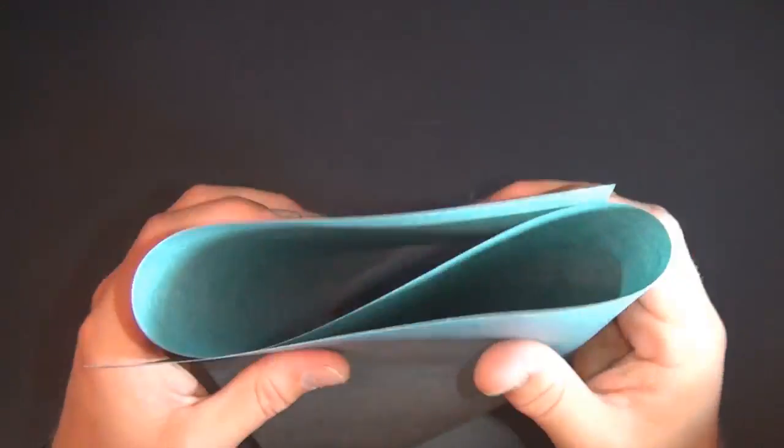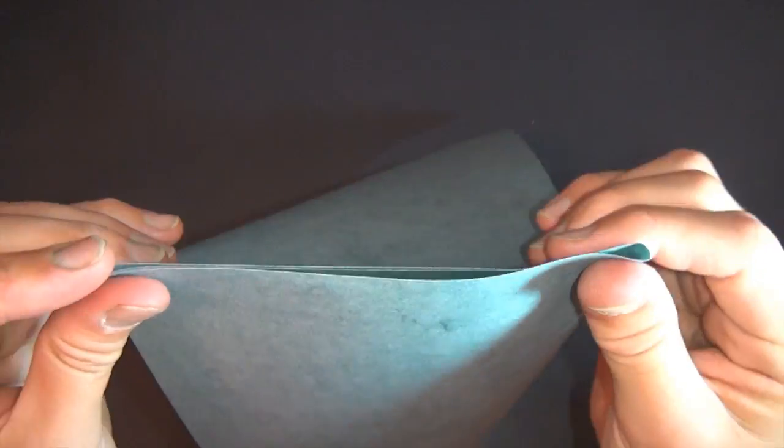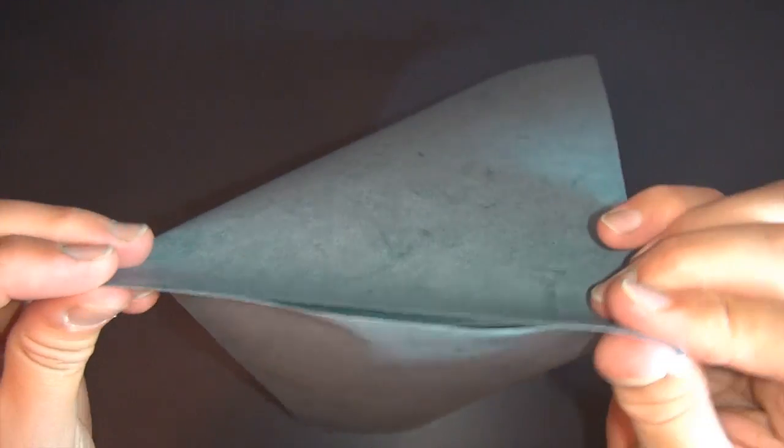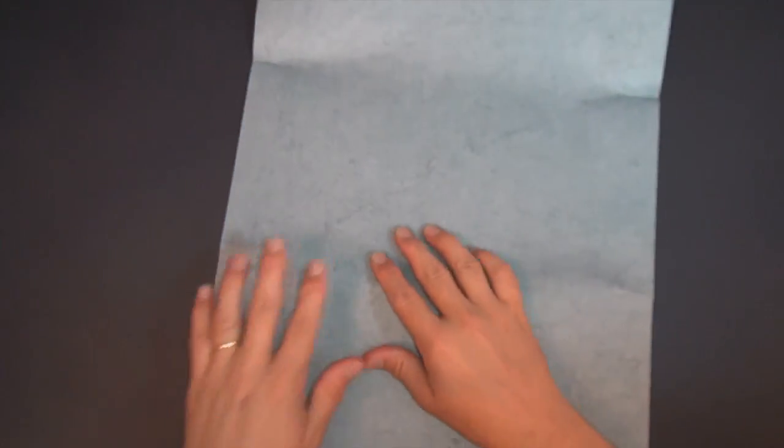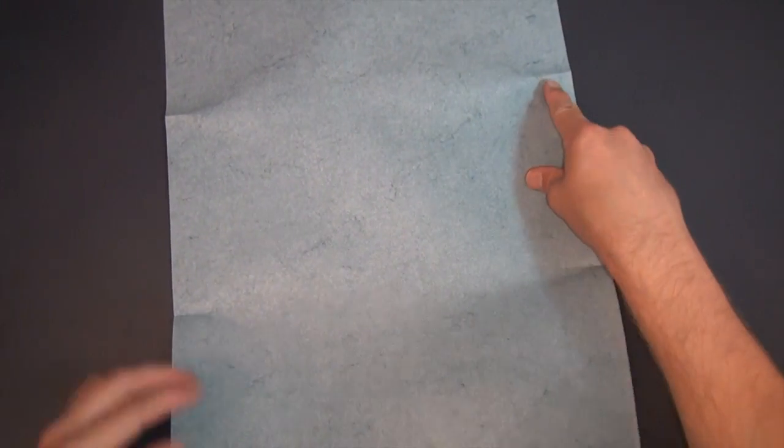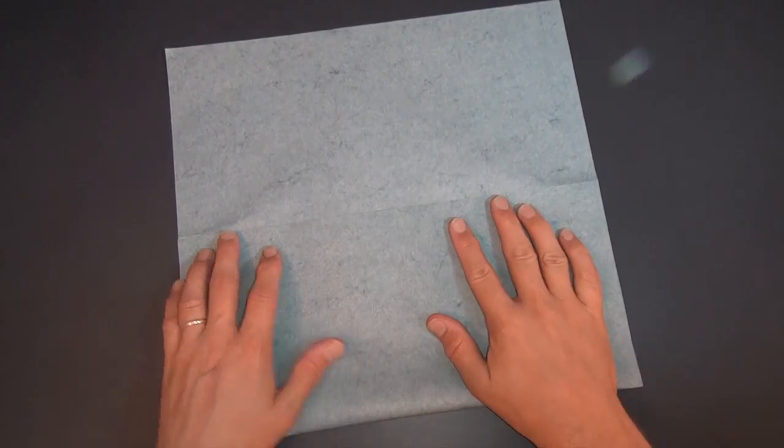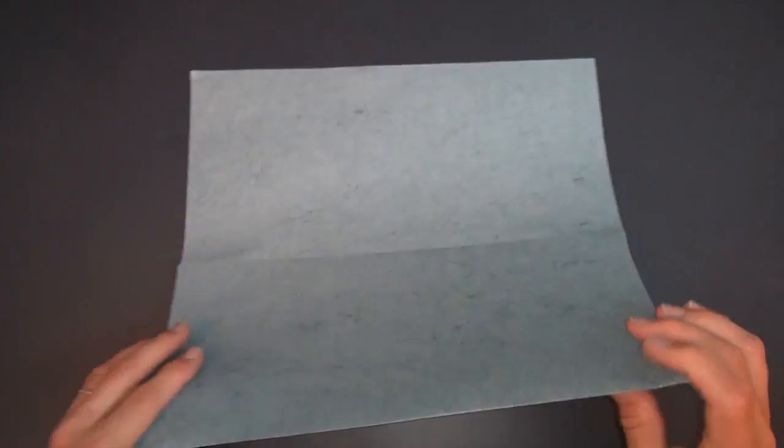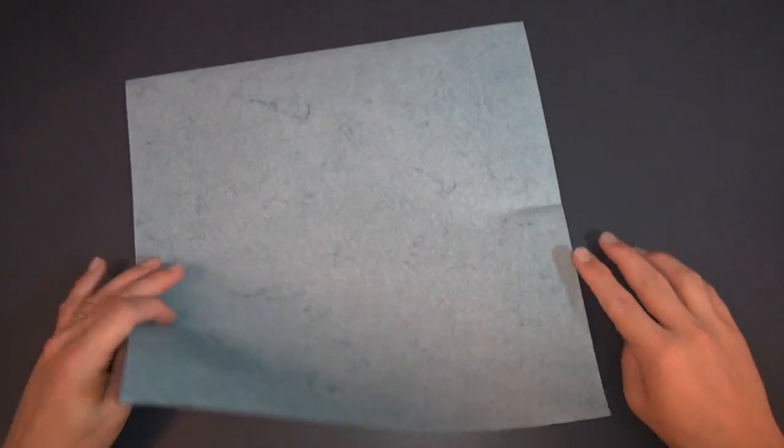Okay, now we're going to do that same thing on the other side. Now we're going to take this edge and fold it to these two little crease marks that we made. And let's turn it over top to bottom and take this edge and fold it to here.